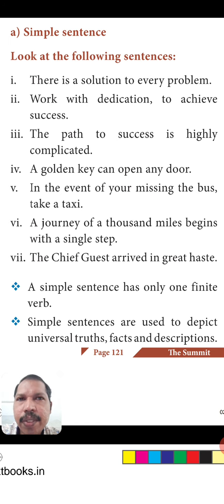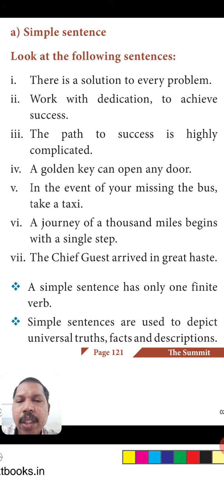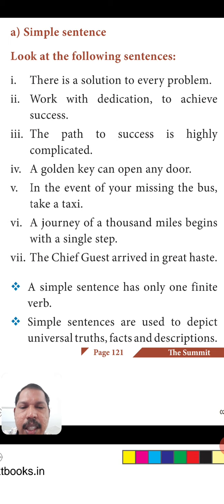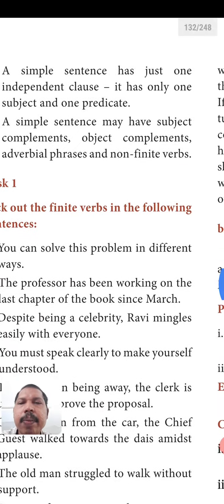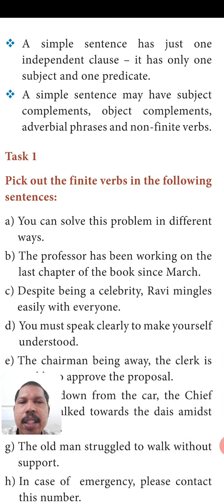That finite verb only will be there in all these simple sentences. We need not consider the non-finite verbs at all — like the infinitive 'to like,' or the gerund form 'liking' — those are non-finite. They can be added anywhere, even in phrases. A simple sentence has just one independent clause. The simple sentence and independent clause remain the same. There may be some phrases, but it has only one subject and one predicate.